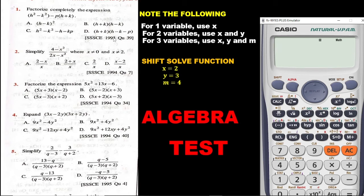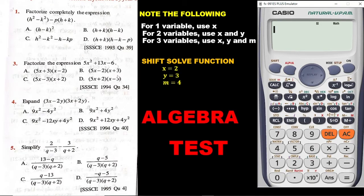So in a question, if you have let's say B and C — these are two letters — if we have a question in which there are only two variables, we are going to replace those variables with X and Y. And then for three variables, we are going to use X, Y and then M. So now we move on to the second question.